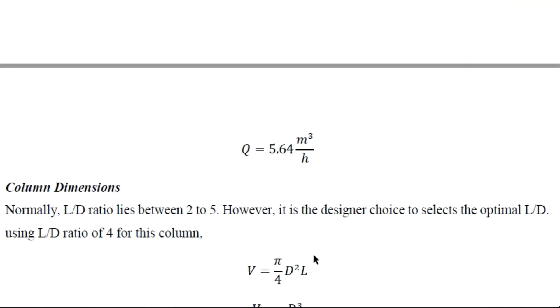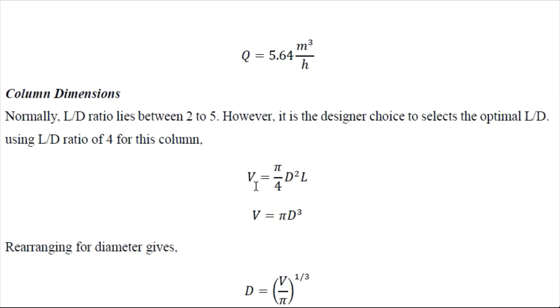Now for column dimensions we know that we have determined the volume of the adsorbent previously. So L by D ratio lies between 2 to 5. So we can take any value between these. So I have taken 4 here, L by D ratio.